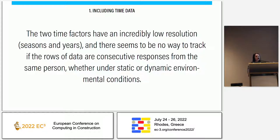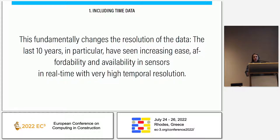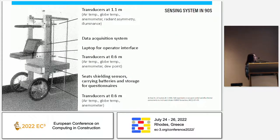I'm the fourth presenter and we'll have two more, so right before lunch you'll probably feel even colder. We can't understand this from the database because there's no time factor. One potential reason is that the data in this database comes from experiments conducted between 1979 and 2018 — on average around 2003 — which changes the resolution of data collection. I really like this photo from 1994: they had a mobile sensor kit with a laptop and would walk around office buildings measuring environmental factors, asking people questions, and typing it in.